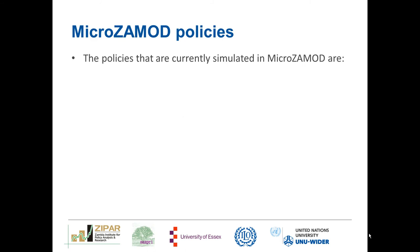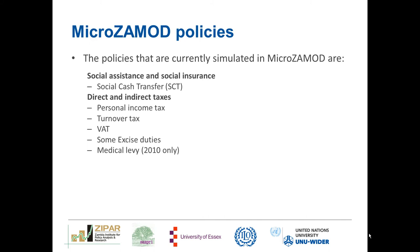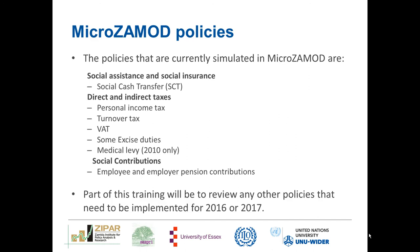The policies currently simulated in MicroZamod include one social assistance policy — the social cash transfer — and five direct and indirect taxes: personal income tax, turnover tax, value-added tax, excise duties, and the medical levy, which was only simulated for 2010 as it was discontinued after that year. There are also social contributions in the form of employee and employer pension contributions. Another part of this training will be to review other policies that need to be implemented for 2016 or 2017.